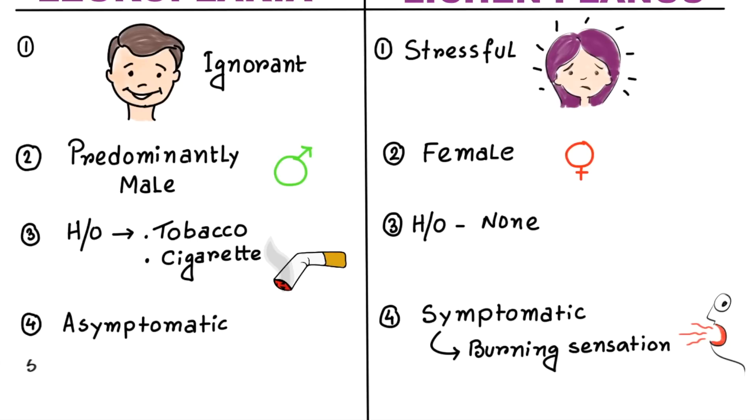Next thing you should remember is that Leukoplakia mostly occurs unilaterally, but Lichen Planus is most of the time bilateral.